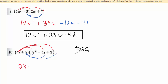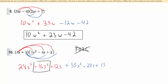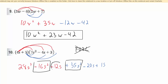Distributing the first term gives 28s cubed, and then negative 16s squared, and then plus 12s. Then distributing the 5 gives plus 35s squared minus 20s plus 15. The like terms are a little further away — let me box the two s squared terms and combine those. Notice it's a good idea to box the sign in front too — I didn't just box the 16, I boxed the negative. For the s to the first power terms, I'll circle those instead of box them so I can tell the difference. Then just combine those like terms.